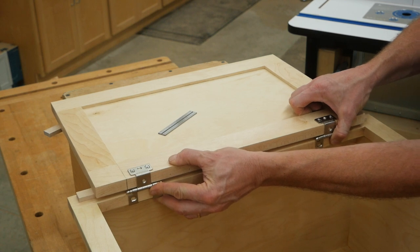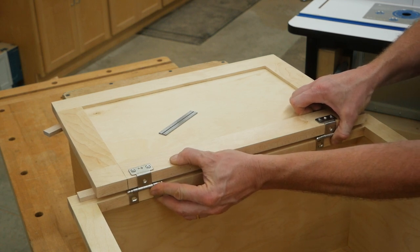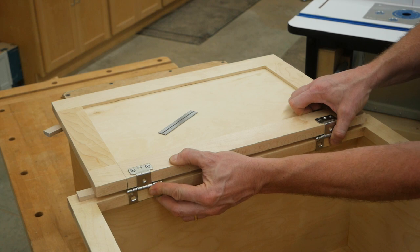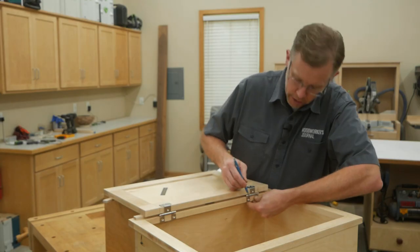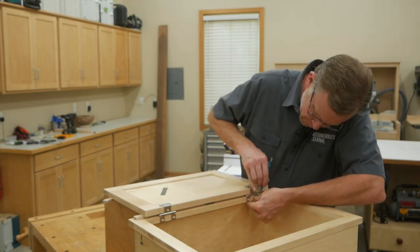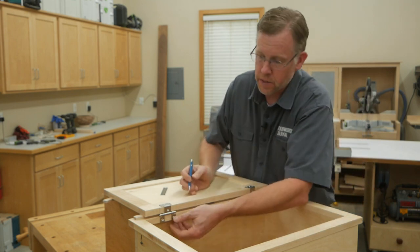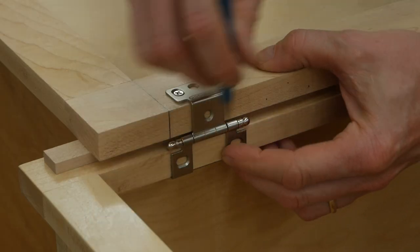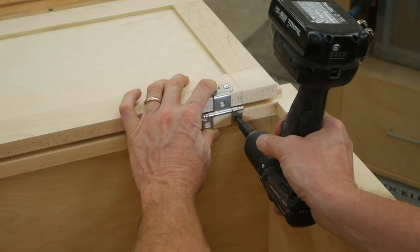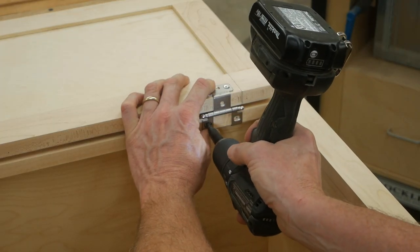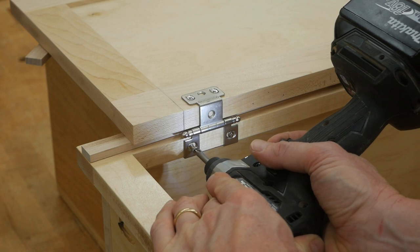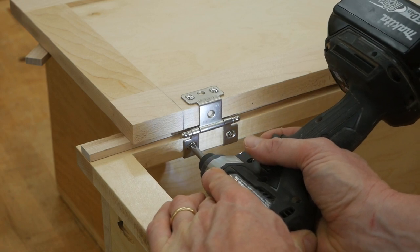Move the door up or down as needed on the face frame to create a fairly even reveal between the top and bottom edges of the door and the face frame rails. Now carefully mark the positions of the face frame side hinge leaves with a pencil or marking knife so you'll know where they need to be. Go ahead and install these hinge leaves driving the screws into the edge of the face frame. Center the screws inside the slotted holes.